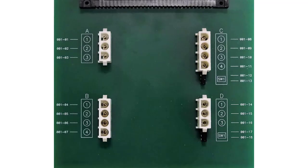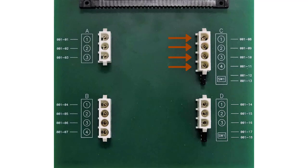Let's take another look at the tutorial fixture board layout. There are four fixture blocks with the following characteristics. Fixture block A has three pins. Fixture block B has four pins. Fixture block C has four pins and one detection switch. Fixture block D has three pins and one detection switch.